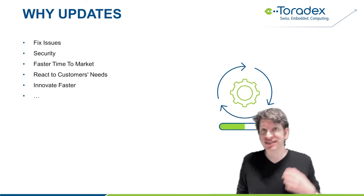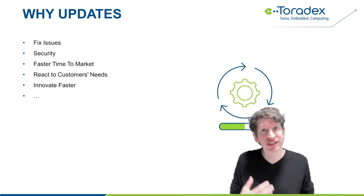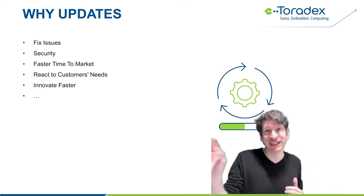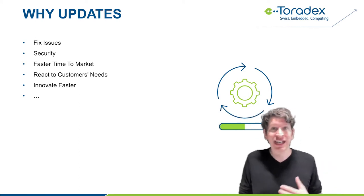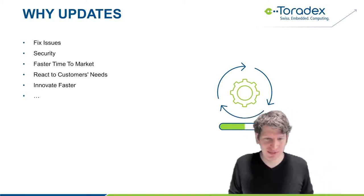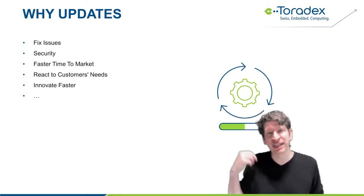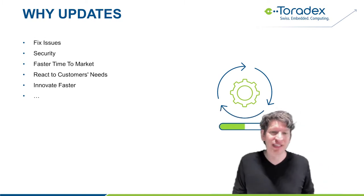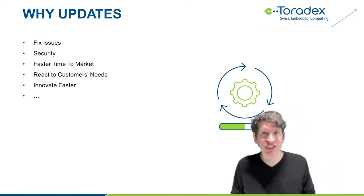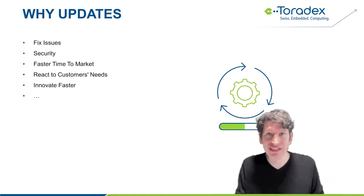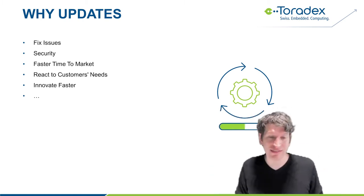Customer needs may change — Covid was a very good example where people changed how they interact with devices. If you have update capabilities, you can react to that. And you can iterate faster: you may have good ideas or things you want to try out, get them in front of people quickly. You don't need to wait two years for a new hardware revision or a month to get devices from the factory to the warehouse and out to customers.